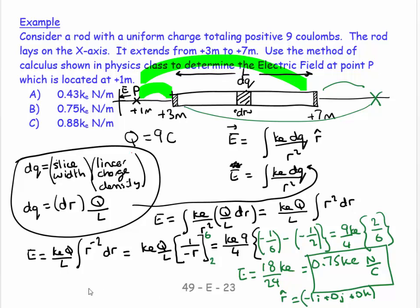If I want the whole thing, I would say my vector E would equal, simply take your magnitude, 0.75 ke, and then multiply it by a unit vector, minus 1i plus 0j plus 0k. And the answer would be in newtons per coulomb. So the vector form on the left and the scalar form on the right.